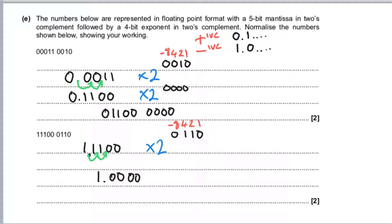Before, it was times 2 to the power of 6. Has the mantissa become bigger or smaller? Bigger. Mantissa becomes bigger, so the exponent has to become smaller by 2. So my exponent is going to be 0, 1, 0, 0. The answer is written as 1, 0, 0, 0, 0, then the exponent: 0, 1, 0, 0. And that is the answer done beautifully.